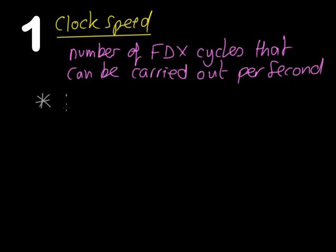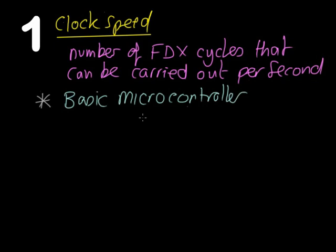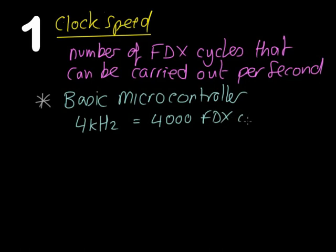What sort of speeds are we talking about? A basic microcontroller — the sort found in embedded systems — runs at a clock speed of around 4kHz. These are the slowest ones. In practice, that means the microcontroller can perform 4,000 FDX cycles per second. That's 4,000 things in one second — which sounds like a lot.